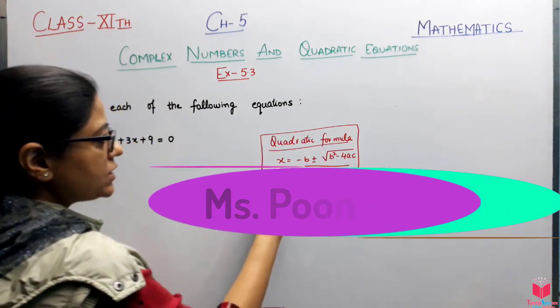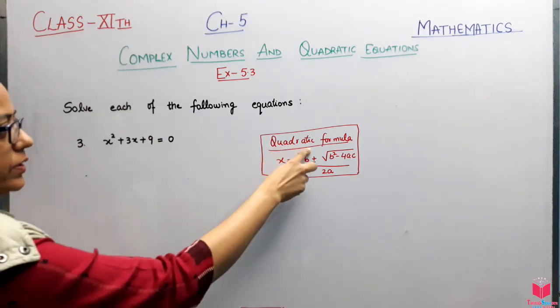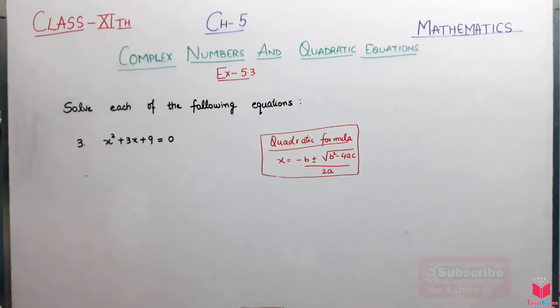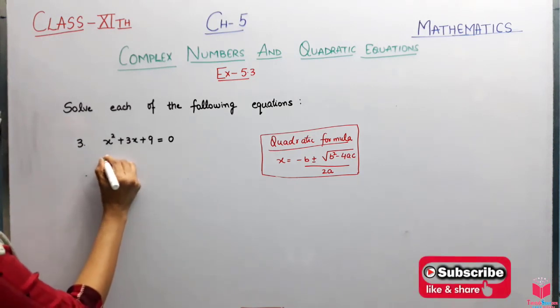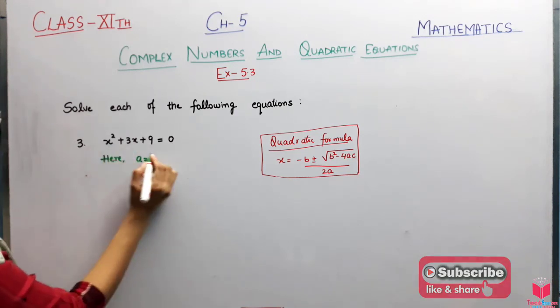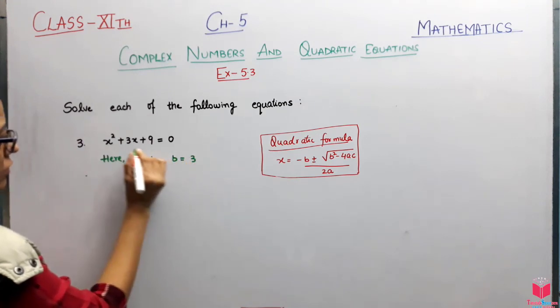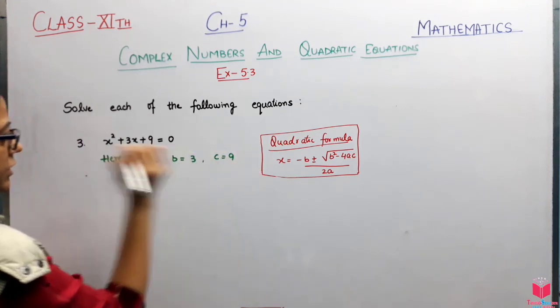We will apply the quadratic formula. How do we apply? First, we will write the quadratic formula. What is the coefficient of x squared? That is a equals 1. B is your coefficient of x, and c is constant.